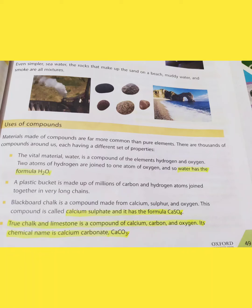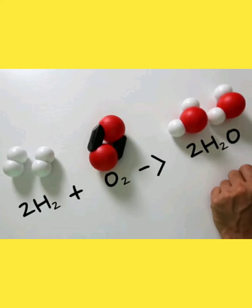Compounds are formed when elements combine together chemically. Materials such as compounds are far more common than pure elements — there are thousands of compounds around us. The vital material water is a compound of hydrogen and oxygen: two atoms of hydrogen combined with one atom of oxygen. In the model, the red ball is oxygen and the two white balls are hydrogen.